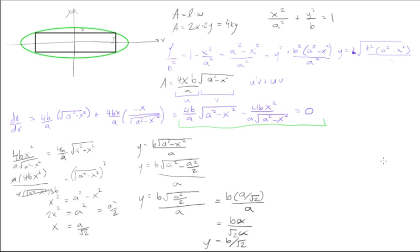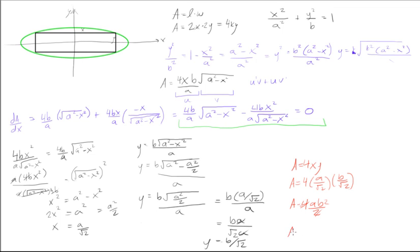Now we have x and y, so we go back to the original equation. The original area formula was A = 4xy. Substituting in x = a/√2 and y = b/√2, we get A = 4 · (a/√2) · (b/√2) = 4ab/2 = 2ab. So the maximum area of a rectangle that can be enclosed within an ellipse is 2ab, where a and b are the semi-axes of the ellipse.